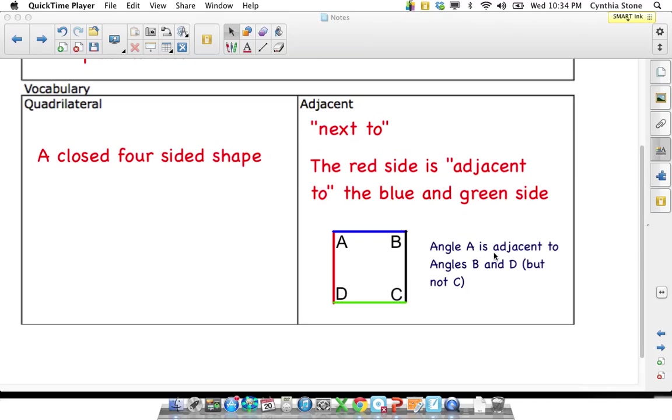Similar in this quadrilateral, the red side is adjacent to the blue side and the green side. Or you could say angles are adjacent. Angle A is adjacent to angles B and D, right? Because they're next to each other. But it's not adjacent to C. It's opposite to C.